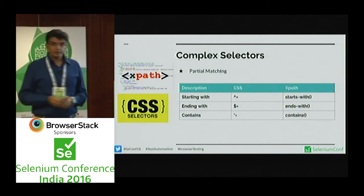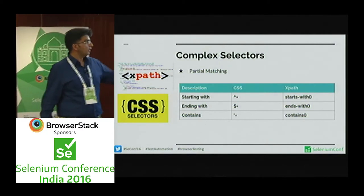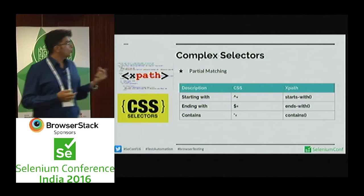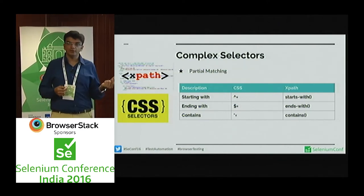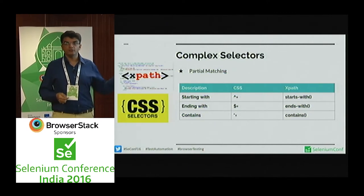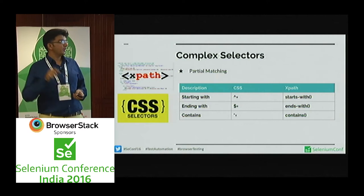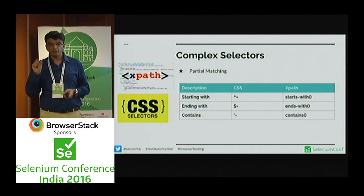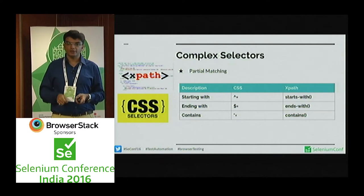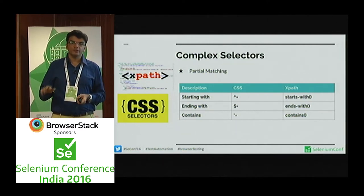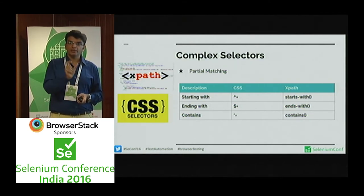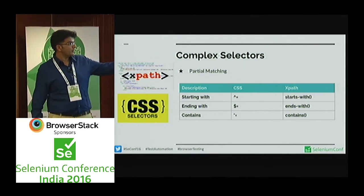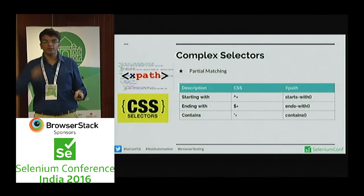Let's look at some complex selectors. Here's a straightforward comparison between CSS and XPath. For partial matching — useful for dynamic elements — let's say the ID is something like 'user123456', where that number is dynamic and will change. Tomorrow that number might become '45678', but the 'user' text will remain the same. In this case, you can use 'starts with': for CSS the notation is caret equals to (^=).